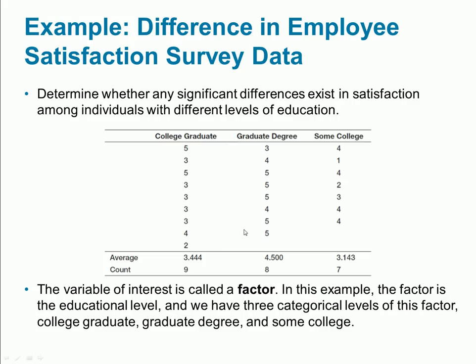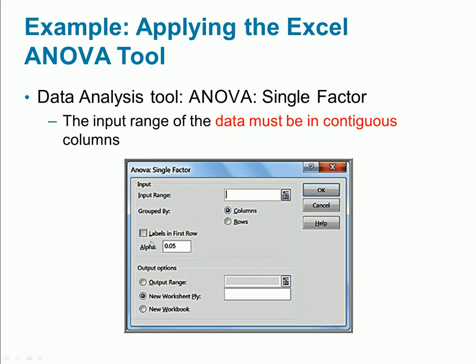You select the data, and if you have labels you check that box. Then enter the alpha value—we're going to use 5 percent—and get the results.